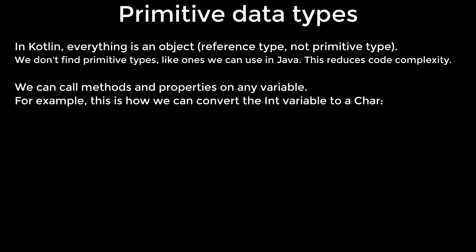For example, this is how we can convert the int variable to a char. Usually, 1D types such as int, long, or char are optimized, but we can still call methods on them as on any other objects. By default, Java platform stores numbers as JVM primitive types, but when a nullable number reference or generics are involved, Java uses boxed representation.